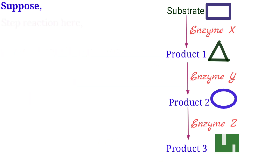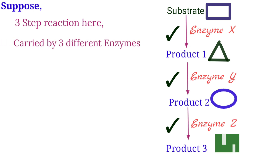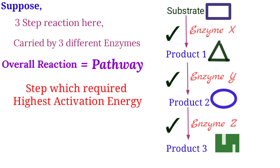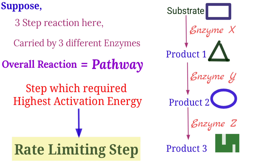In this three-step reaction carried out by three different enzymes, the overall reaction is known as the pathway of reaction. If any one step out of these three requires the highest activation energy, that step is known as the rate-limiting step of that pathway, and it can be any step out of the three.